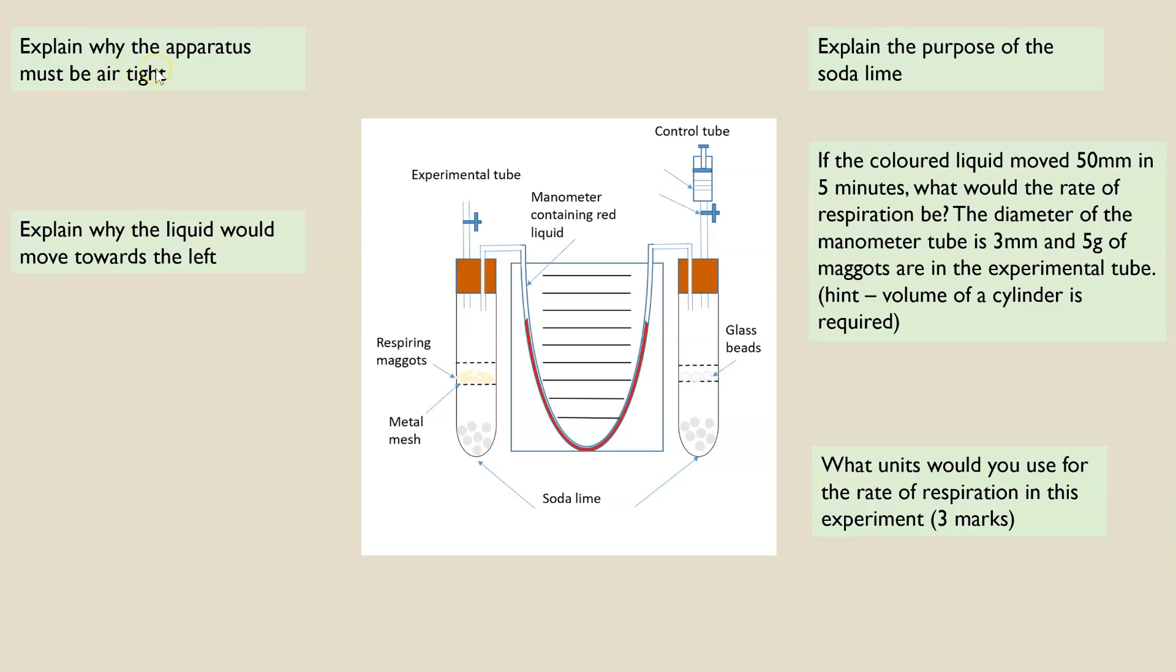So explaining why the apparatus must be airtight and explain the purpose of the soda lime. Then the next one down here is more an application of your knowledge. So you have to use your knowledge of respiration to explain why the liquid would move towards the left. And then the final two are more analysis questions using your math skills. And this one here, three marks for saying what the units would be - that would be your hint to be able to remember that there are three components to the units to include. So have a go. It will take about five to ten minutes if you do want to pause. If not, keep watching and we're going to go through those straight away.